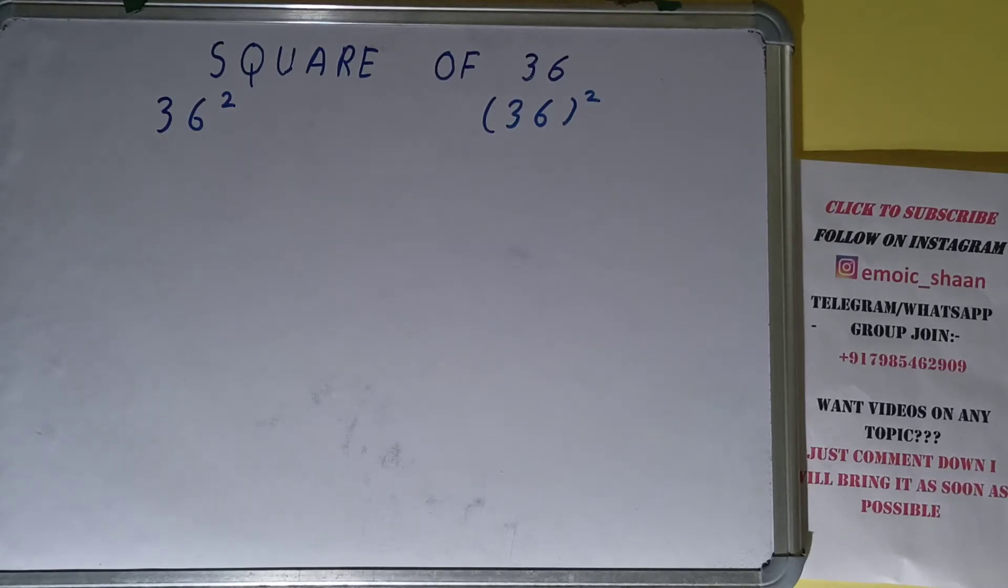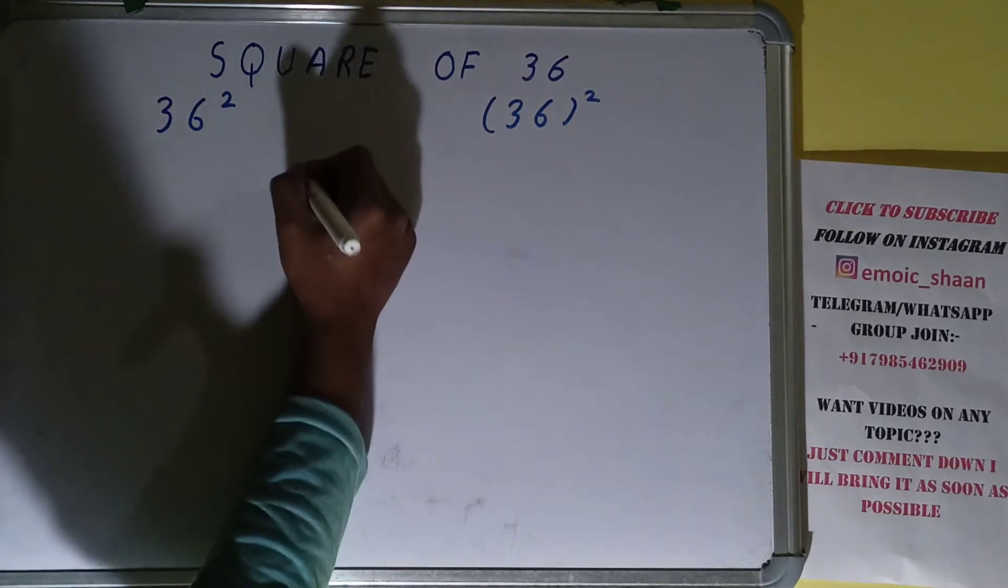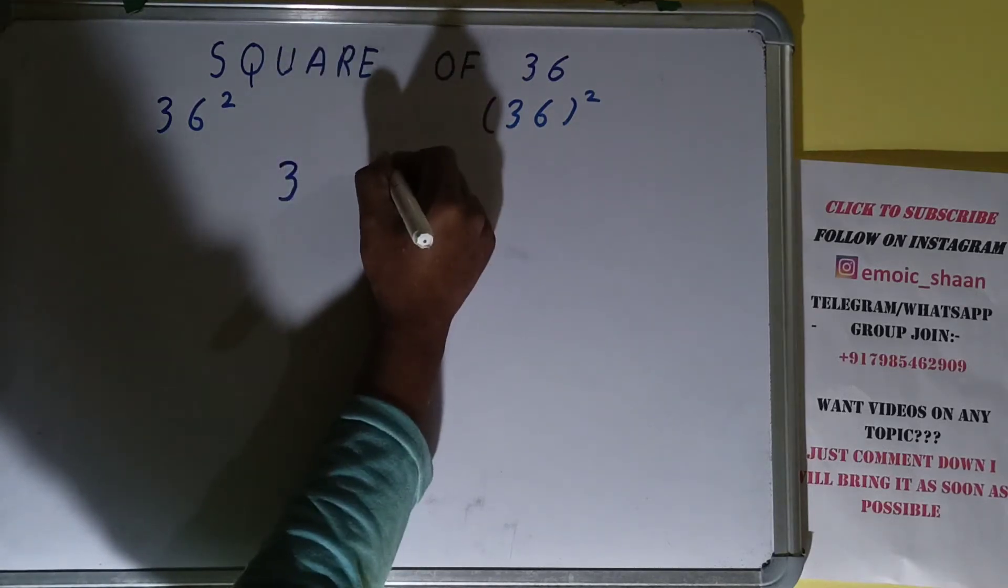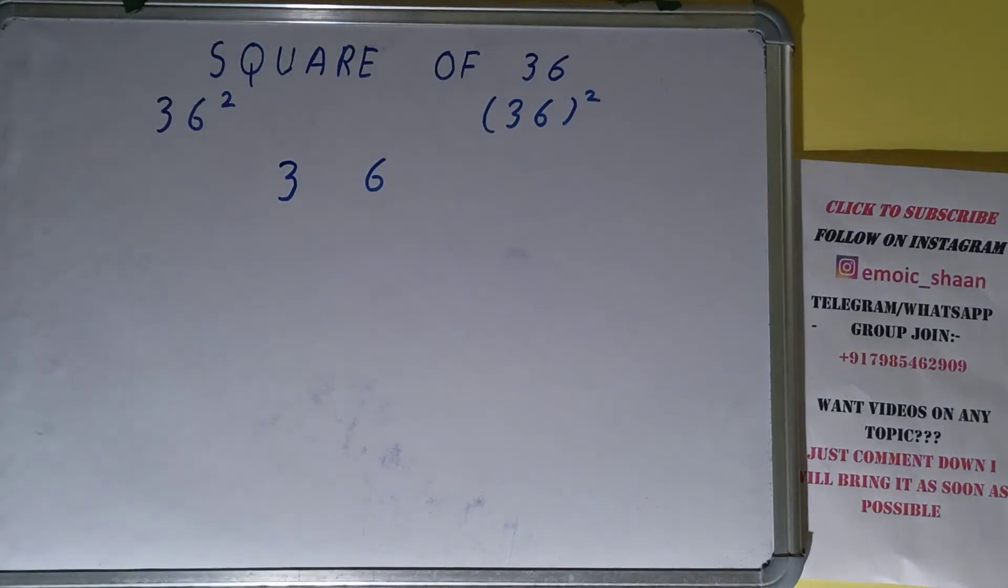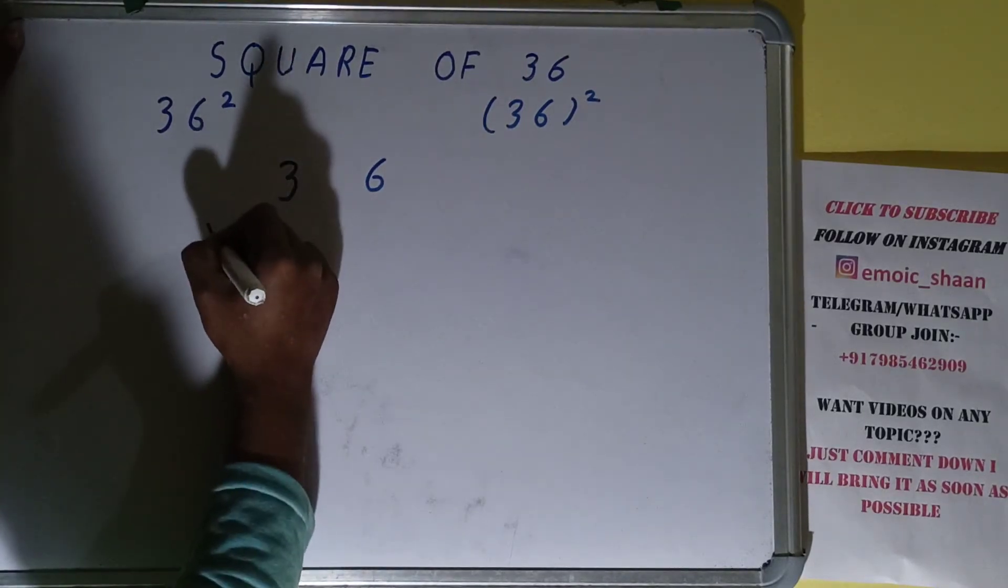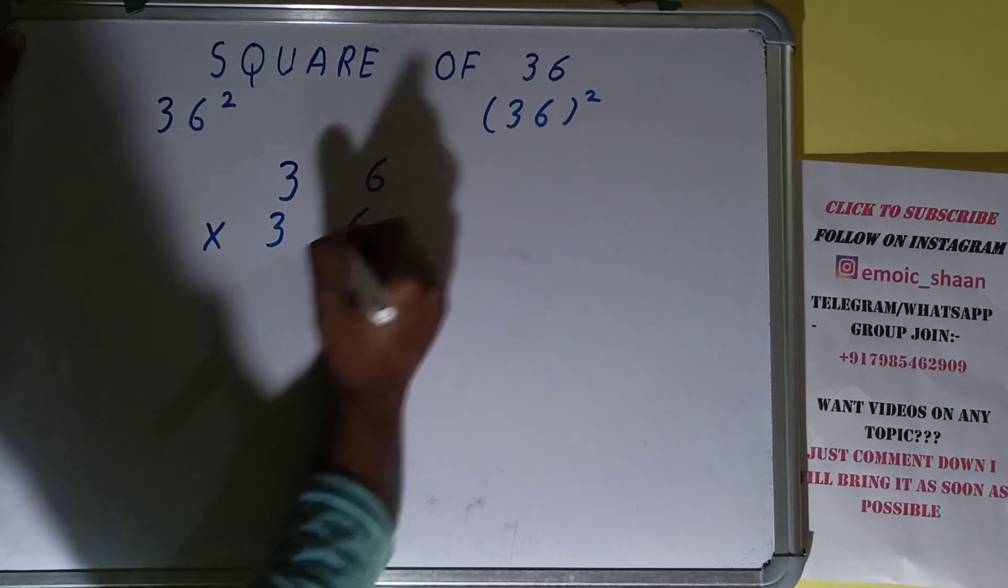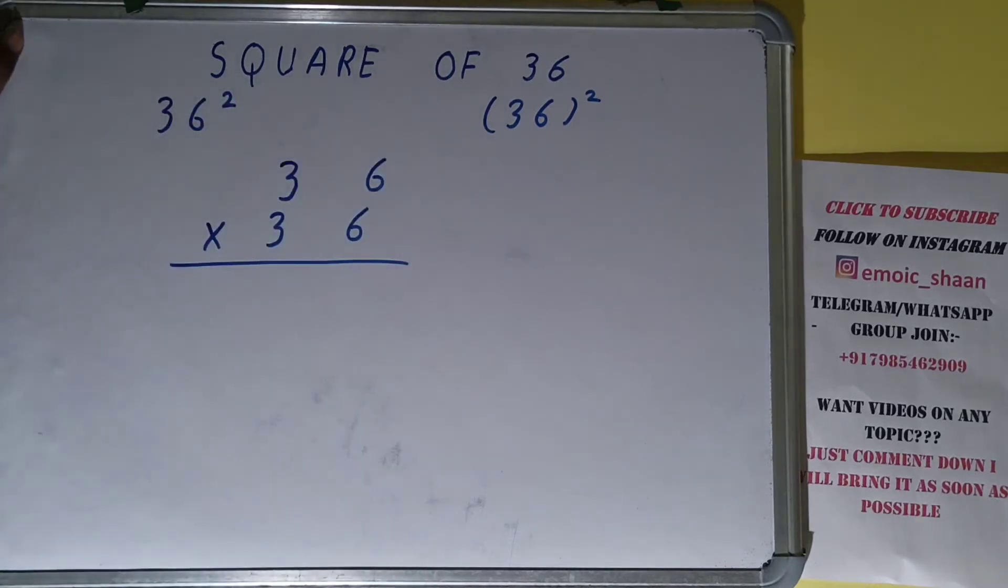Now let's move on to our solution. Square basically means multiplying the number by itself. So here the number is 36, so to find the square of it we need to multiply the number by itself, that is 36.